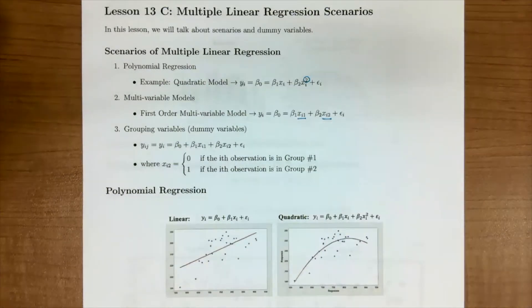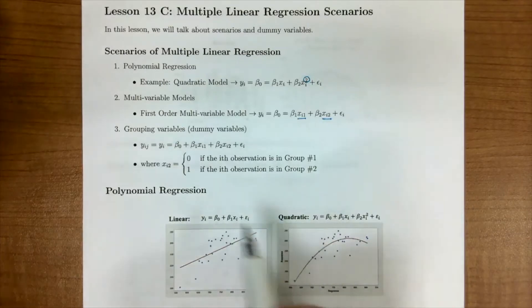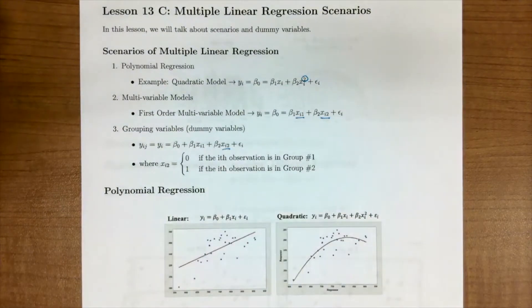We can also have grouping variables or categorical variables that we put into our analysis. So in this case, x2 is going to be our dummy variable or indicator variable, where it's going to take on the value of one or zero depending on the group. And we will talk a little bit more about this and what these look like in a moment.